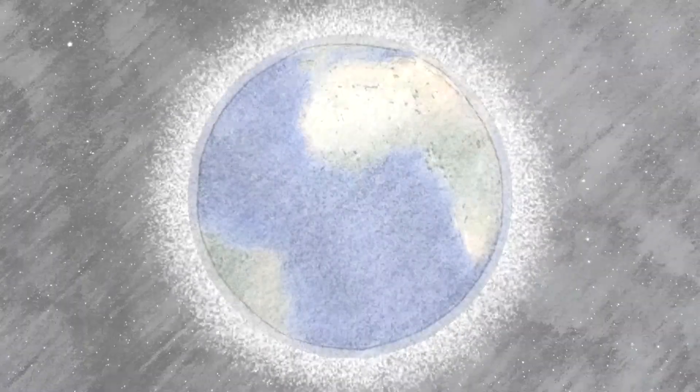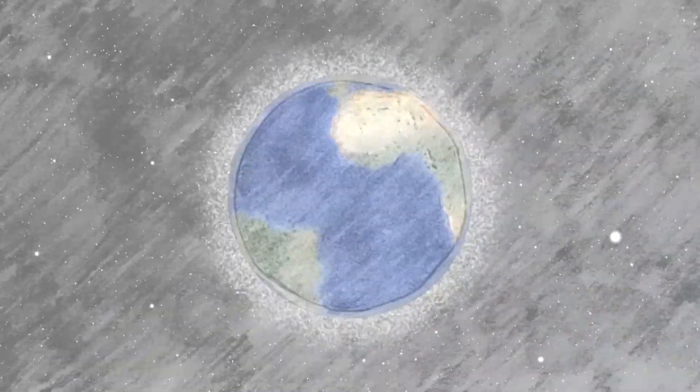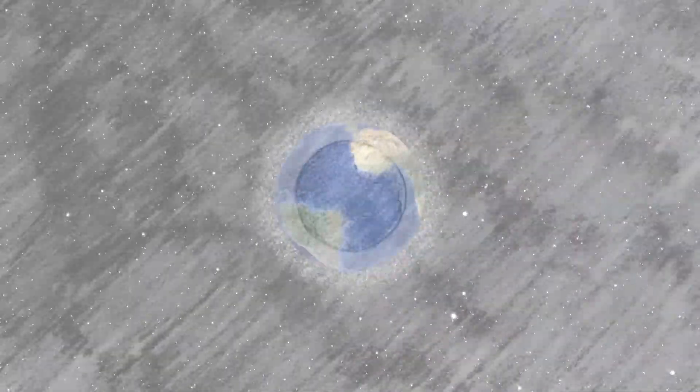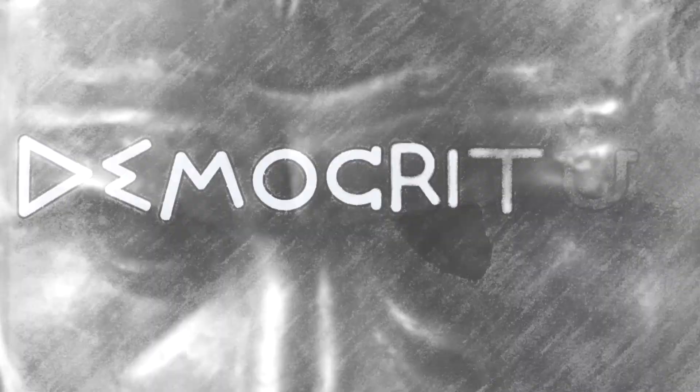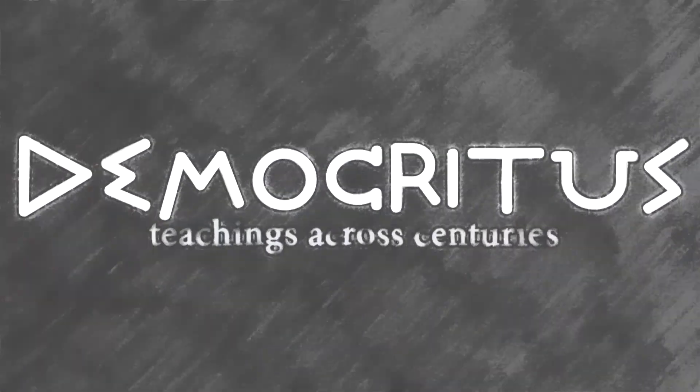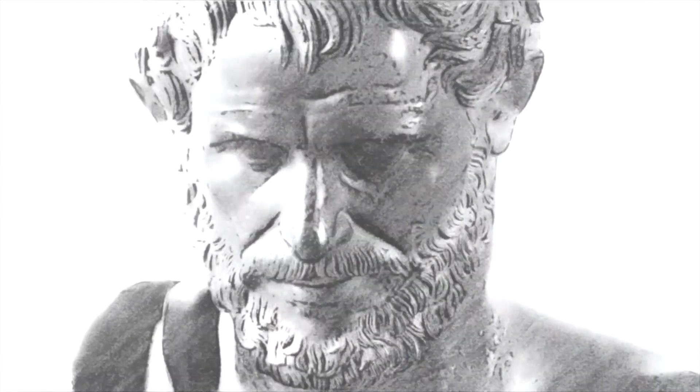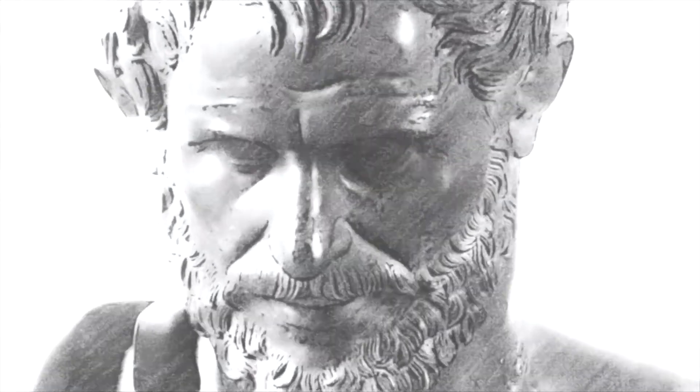He was the first to propose that the world is composed of uncutables. He was the first to posit that there might be a multiverse. He believed that everything happens according to necessity. His teachings have become the foundation for modern science, granting him the title father of modern science. The well-known Democritus. Democritus was an ancient Greek philosopher and